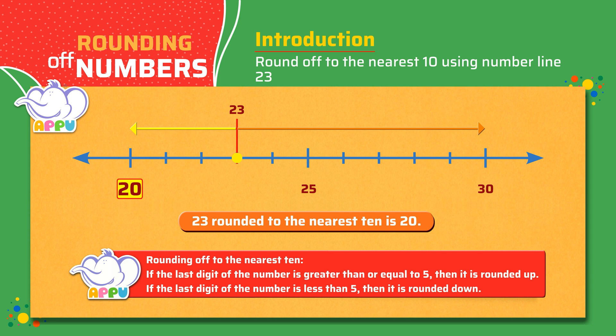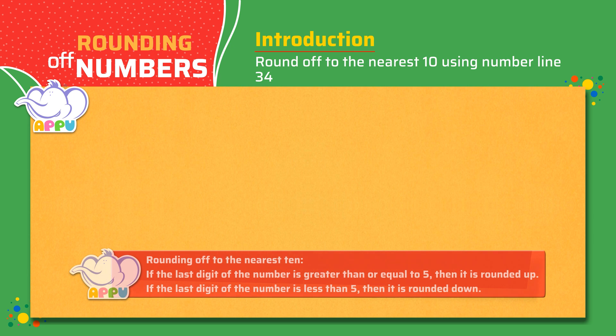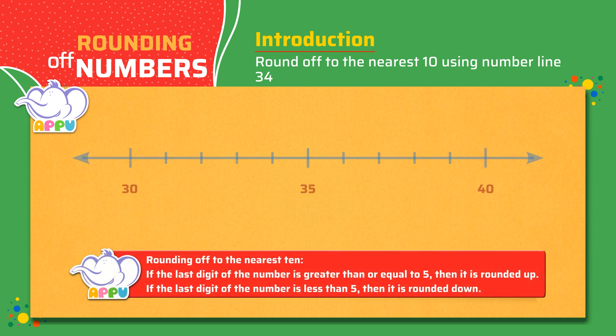Let's look at an example — 34. 34 rounded to the nearest 10 is 30.